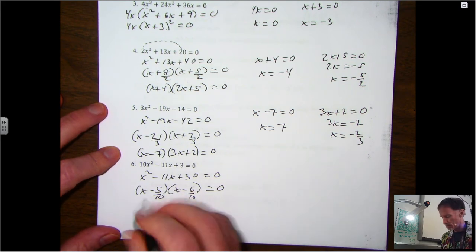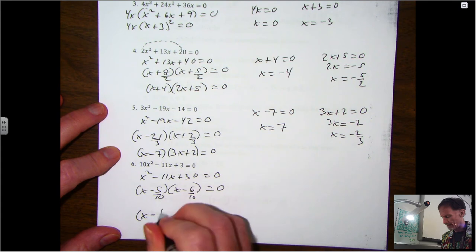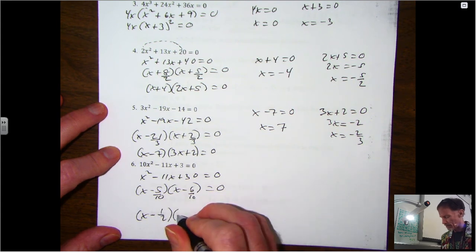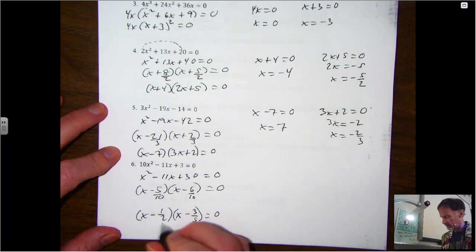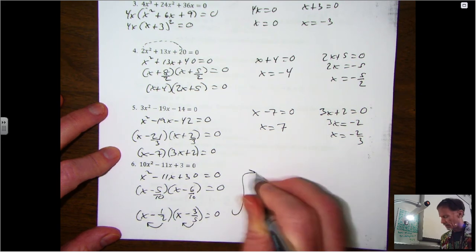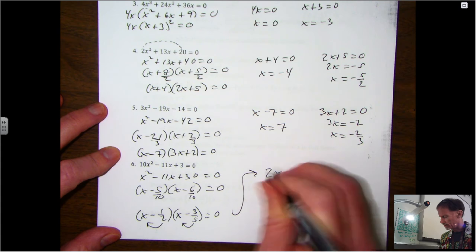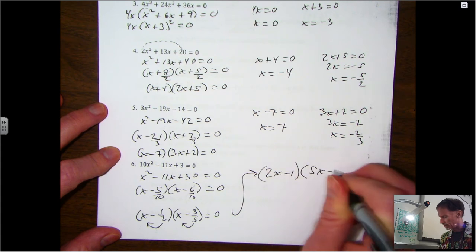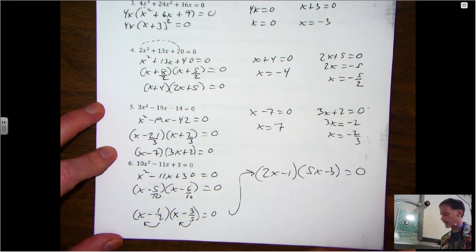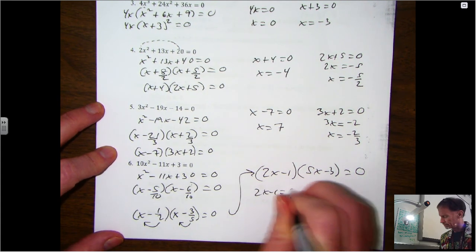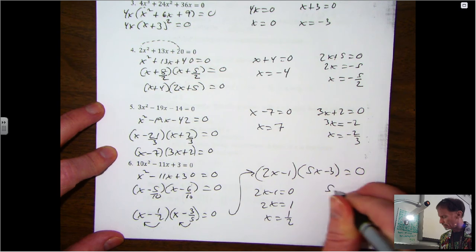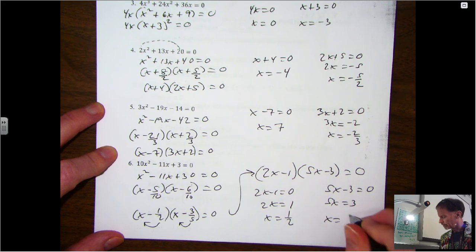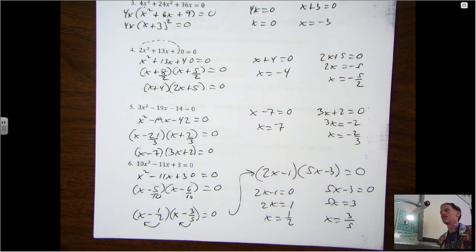So that becomes one-half, that becomes, if we divide both by 2, x minus 3 over 5, and then swing. So we're going to have the factored form of 2x minus 1 and 5x minus 3. And then again we solve it, and there's your solutions.